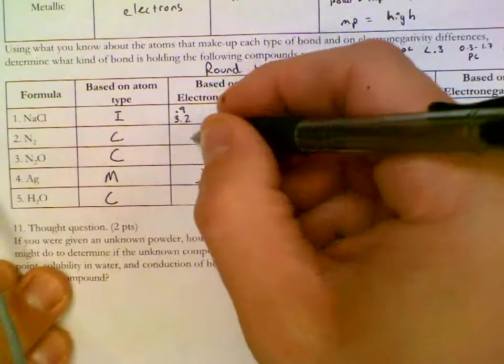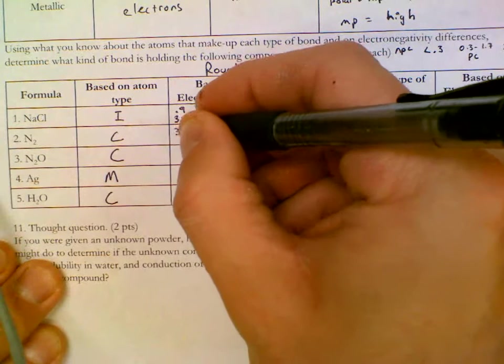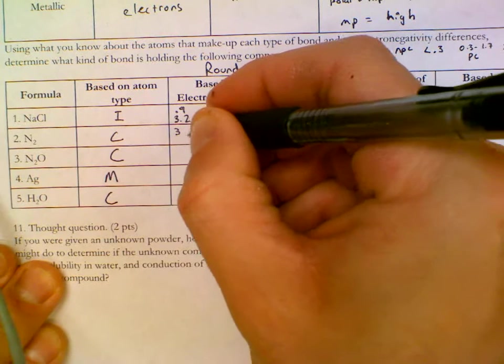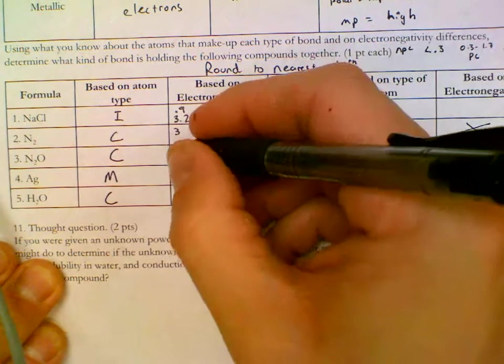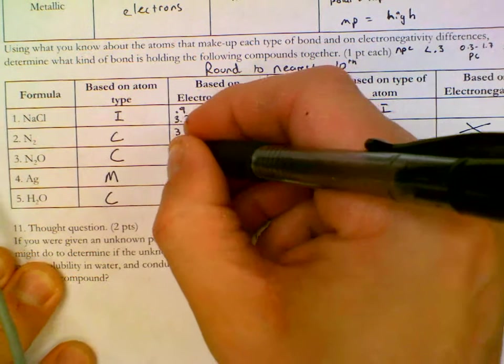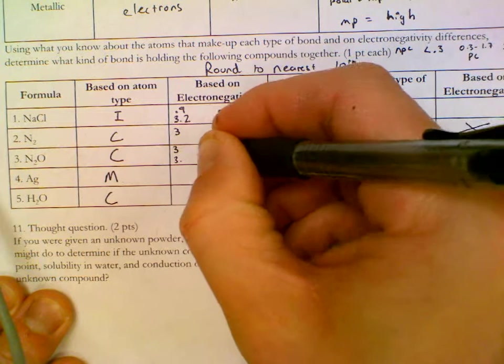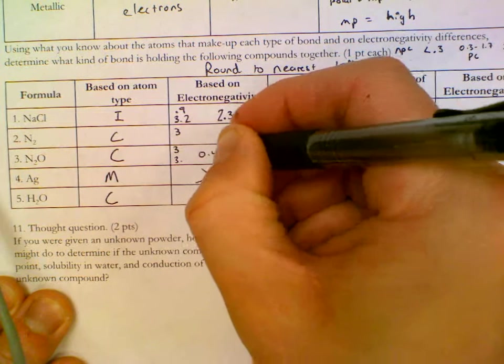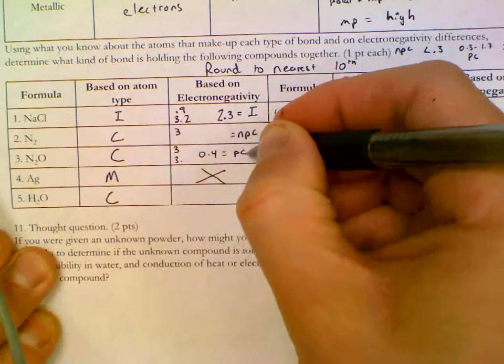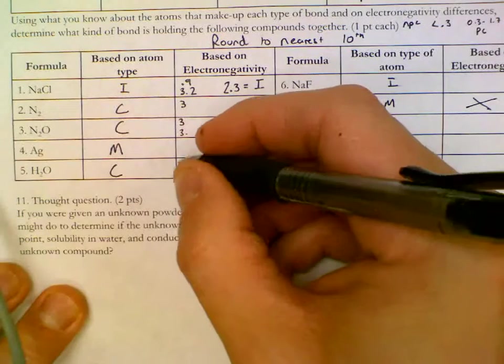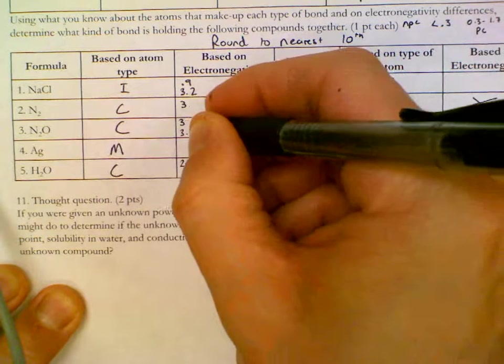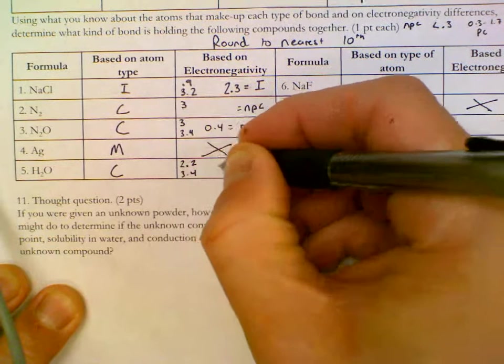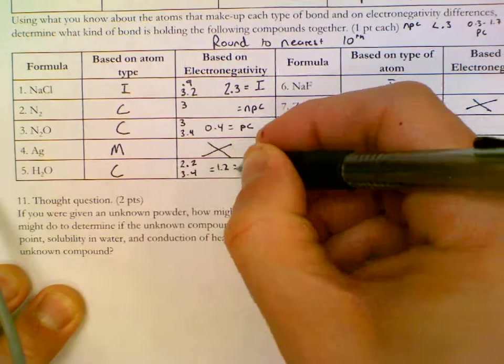Two nitrogens. So it doesn't really matter what their values are because if we subtract them, 3 minus 3, 3.04 rounds to 3, will be nonpolar covalent. A nitrogen to an oxygen, so we just did nitrogen which was 3. Oxygen rounds to 3.4, so that gives us a 0.4, which is a just slightly polar covalent. Hydrogen is 2.2. Oxygen we just did, which is 3.4, so that gives us 1.2, which falls into, that's a pretty polar covalent.